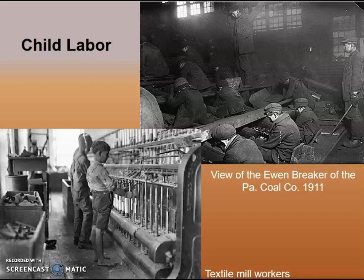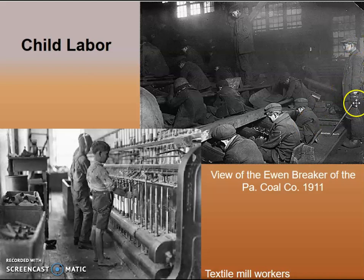Another reason managers preferred child laborers was that they're small and easy to intimidate. You can treat a child laborer in ways that would result in a fistfight with an adult. The photograph on the slide shows the Ewan Breaker at a Pennsylvania Coal Company installation in 1911 — children breaking up coal while an adult manager stands behind them carrying an iron bar. He's carrying that so if a child worker isn't going fast enough or falls asleep, he can strike them. It was not uncommon for managers to physically correct child laborers, and parents were helpless, risking the loss of their child's income to the family.